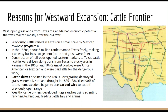The construction of railroads opened up eastern markets to Texas cattle. Cattle were driven along the cattle trails like the Goodnight-Loving Trail and the Chisholm Trail and the Western Trail, up to areas like Kansas City, where you would see stockyards. The first stockyards were in Kansas City, and this is where the early rail lines were connected through Kansas.